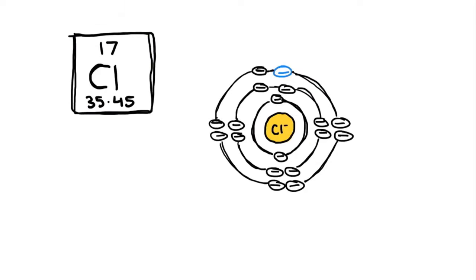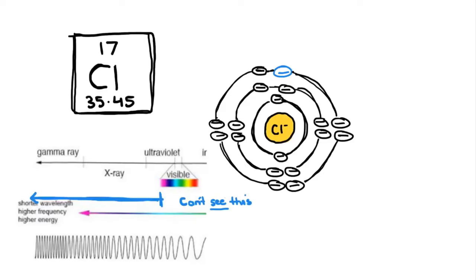But what about the anion you ask? Well, we generally use chloride salts in which chloride's valence electrons are strongly held to the nucleus because of the high electronegativity. It is possible to excite these valence electrons, but as they descend back to the ground state, the emission spectrum is generally outside our visible range, so they don't contribute to the flame color.